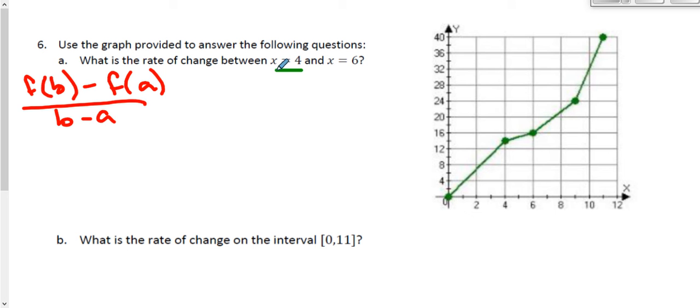Now they gave me my interval right here from 4 to 6. So here's 4 on my graph to 6 on my graph. So that's my a and b value. 4 is a, 6 is b. So that means I can automatically fill in my denominator, 6 minus 4.